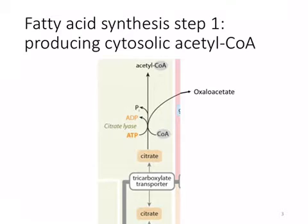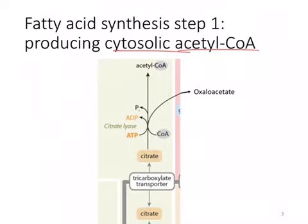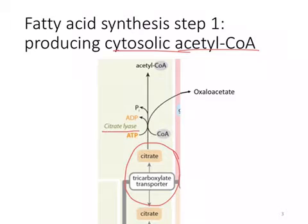The first step in synthesizing fatty acids is to get acetyl-CoA into the cytosol — cytosolic acetyl-CoA. Remember, most of it is produced in the mitochondrial matrix. In order to get acetyl-CoA into the cytosol, citrate has to be transported out of the mitochondrial matrix, and then an enzyme called citrate lyase, or ATP citrate lyase, is activated to cleave the citrate into acetyl-CoA and oxaloacetate.